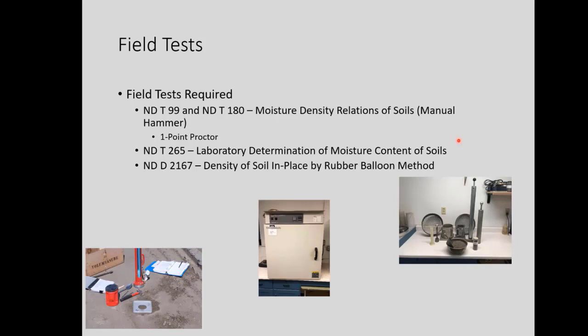The tests we're going to talk about today — there are about a half dozen of them — and pretty much all of them are quick turnarounds, except for the first one, which is the moisture-density relationship of soils, called a proctor. We have 'manual hammer' listed because that's what we'd normally use. In a district lab, you'd probably have a mechanical hammer, but out on the job, a manual hammer is more practical, so that's our emphasis today.